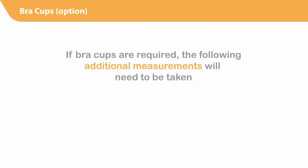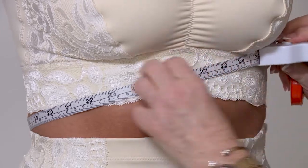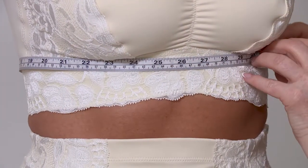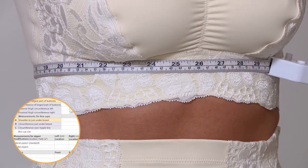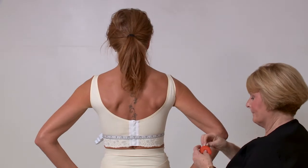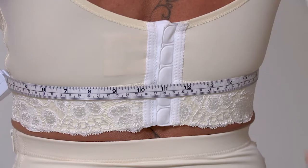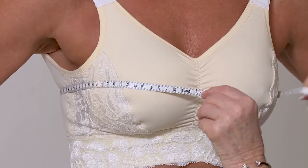If bra cups are required, the following additional measurements will need to be taken. Using the circumference tape, measure the circumference directly under the breasts, measurement B, and leave the tape in place. With a regular measuring tape, linear measurement A — shoulder to under the breasts — is taken from the top of center shoulder to the bottom of the circumference tape already in place. Using a regular measuring tape, take the circumference over the nipple line, measurement C.